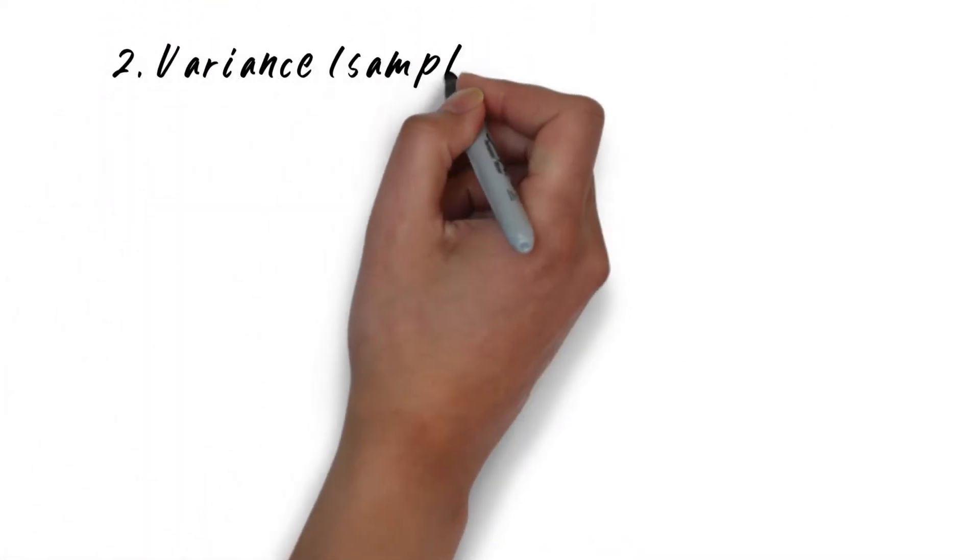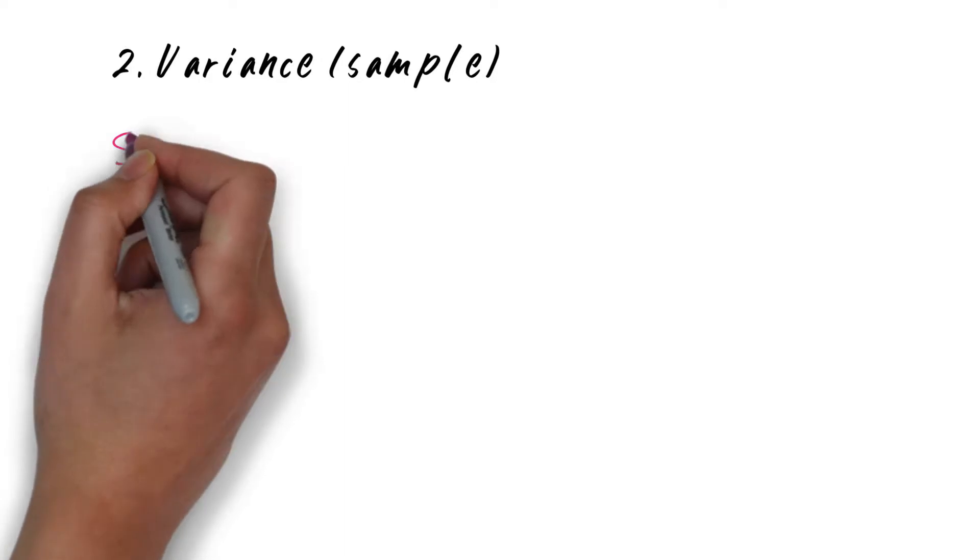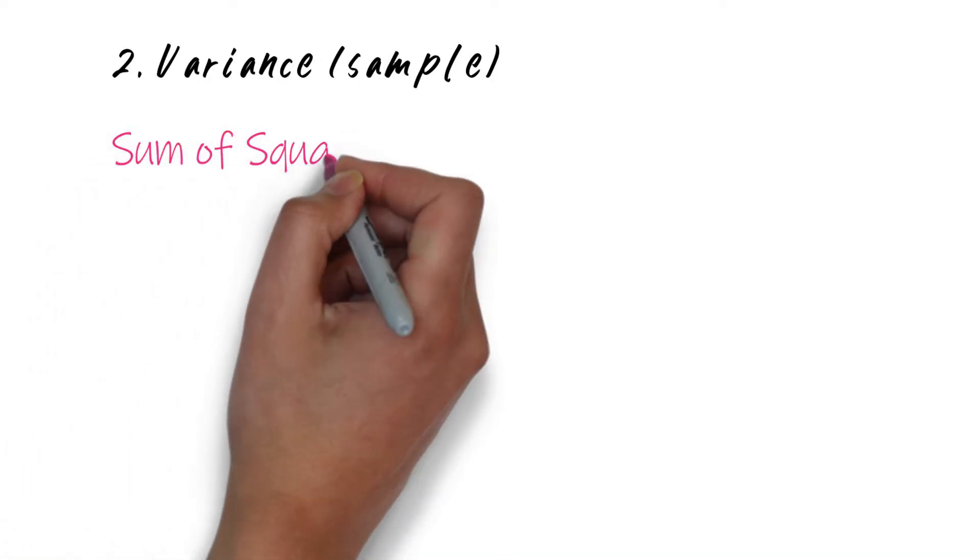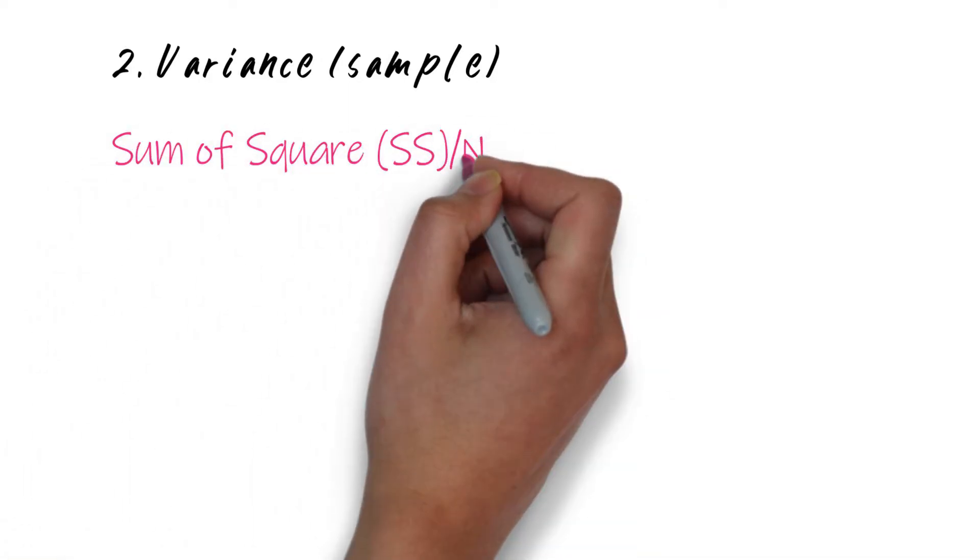Variance is simply sum of squares divided by number of data points minus 1.